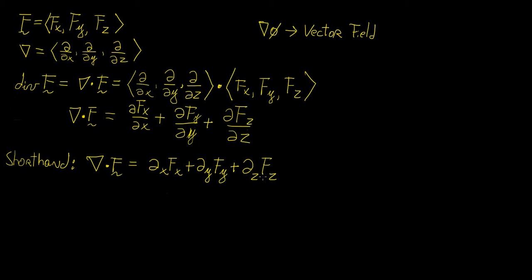From now on you'll notice that I'm going to start using a shorthand notation, because writing partial derivatives in full can be quite exhausting, especially when you have to write them over and over again. So I'm just going to use the shorthand method where you write the partial symbol and then a subscript indicating the variable you're differentiating with respect to.